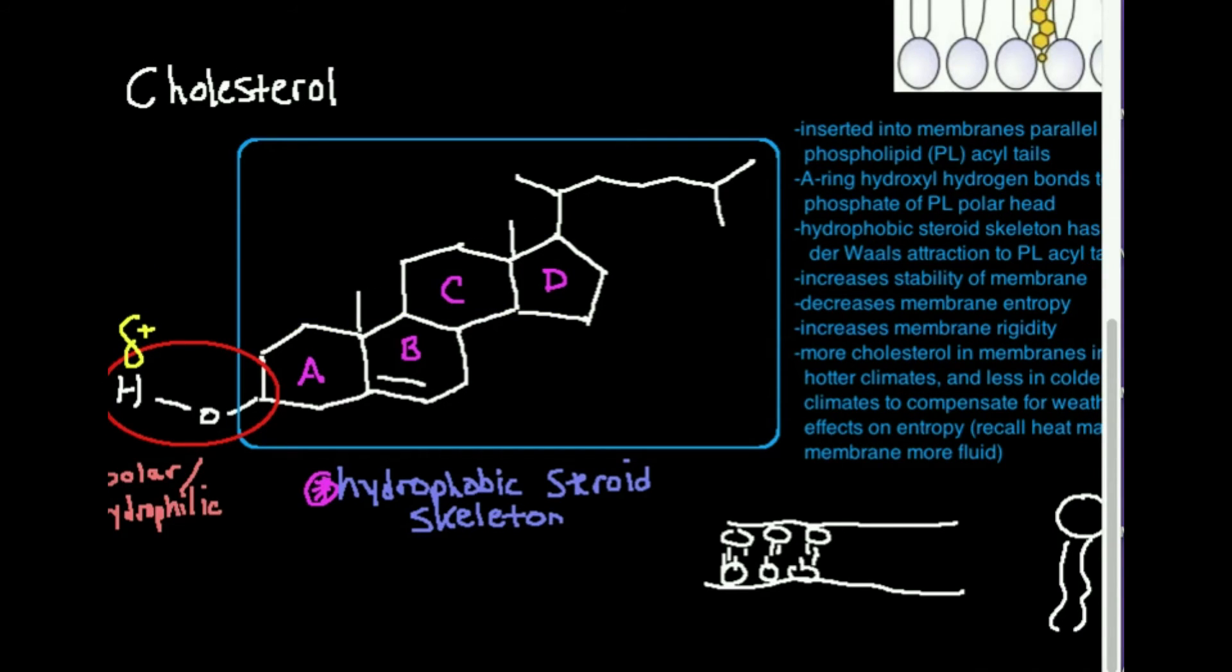So it turns out that the A-ring hydroxyl group, which is this right here, is going to hydrogen bond to the phosphate of the phospholipid polar head. We'll look at what that looks like in the next video, but suffice it to say the phosphate of the phospholipid is going to hydrogen bond with this OH group of cholesterol.